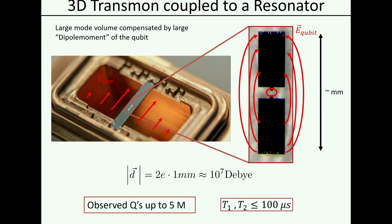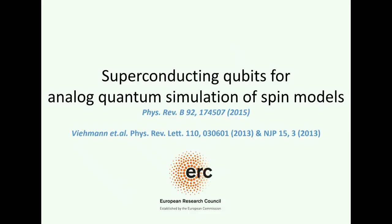The best coherence times we have observed in such a system are right around 100 microseconds for both T1 and T2, and more regularly in experiments nowadays all the groups see a few tens of microseconds. These are the fundamental building blocks we want to use to build an analog quantum simulator. You can find more details in our Physical Review B paper where we joined forces with Peter and Marcello to figure out what we can and want to do with it, and there is also work by Florian Marquardt's group working on spin chains.